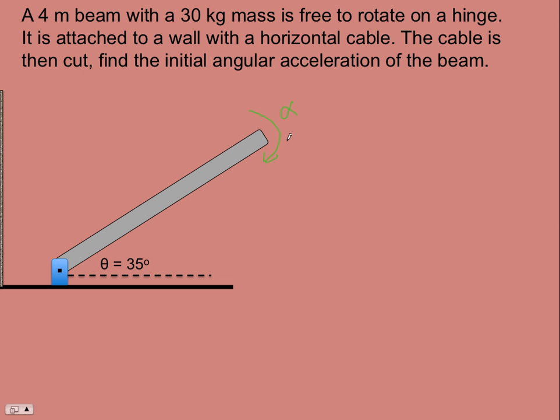Now we need the rotational inertia of the beam, and I about the end of a rod is one-third mL squared. We need the free body diagram again, except now no tension, just the weight of the beam and the forces at the hinge.